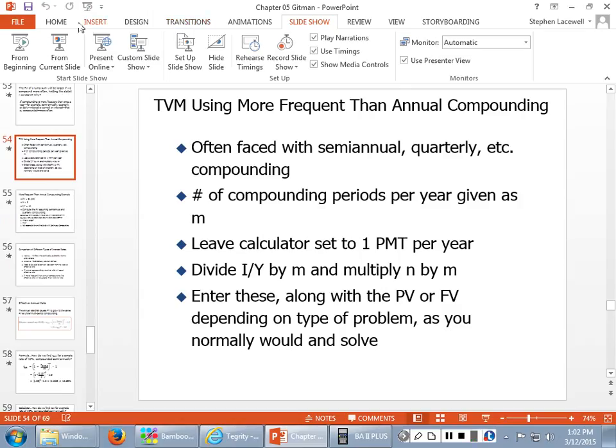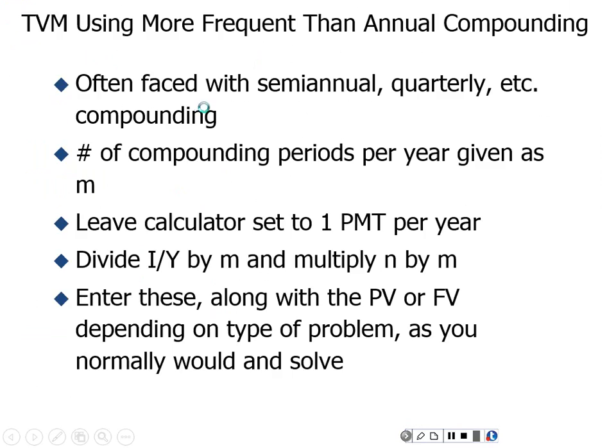Up until this point, when talking about present value or future value calculations, we're assuming we are compounding — or discounting — one time per year, annually. That's because it makes things easier when you're learning this initially. But in real life, you often have accounts or investments that compound interest more frequently than annually, which is actually pretty common. So we need to know how to handle that.